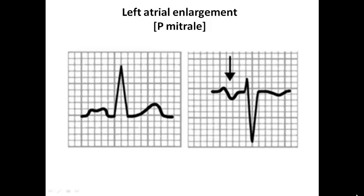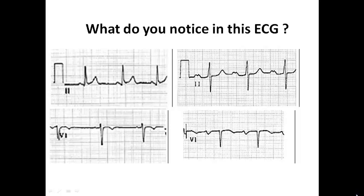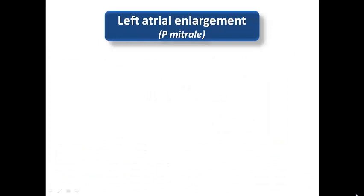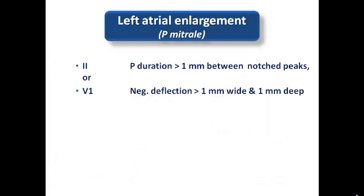On the surface ECG, left atrial enlargement shows increased P wave duration in lead 2 with two humps separated by more than 1 mm in duration, and an accentuated negative component in V1 of more than 1 mm width and more than 1 mm depth. So the criteria for left atrial enlargement are: P wave duration more than 120 ms, the interval between the two notched peaks more than 1 mm, and in V1, a negative deflection more than 1 mm wide and more than 1 mm deep.